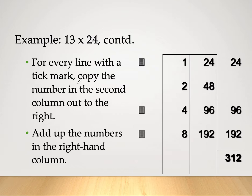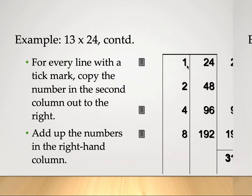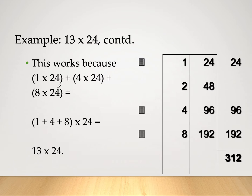For every row with a tick mark, we copy the number in the right column. The ticked rows give us 24, 96, and 192. Adding those up gives 312 as the answer. This works because 1×24 + 4×24 + 8×24 = 24×(1+4+8) = 24×13 = 312. That's the proof that the Egyptian method is valid.